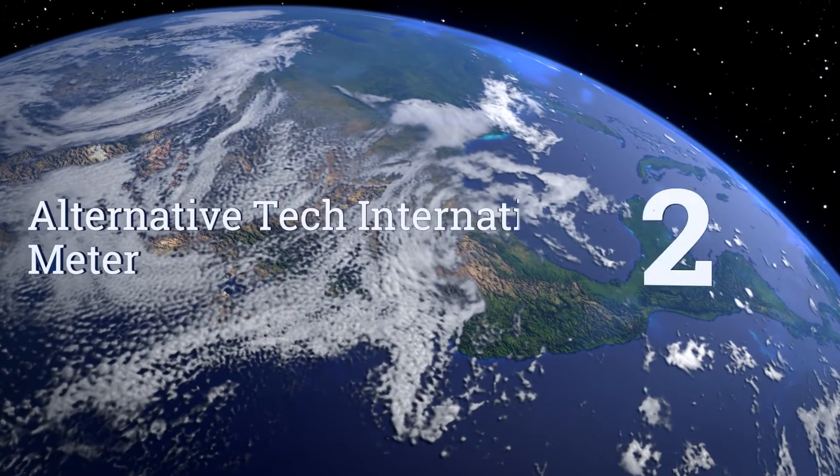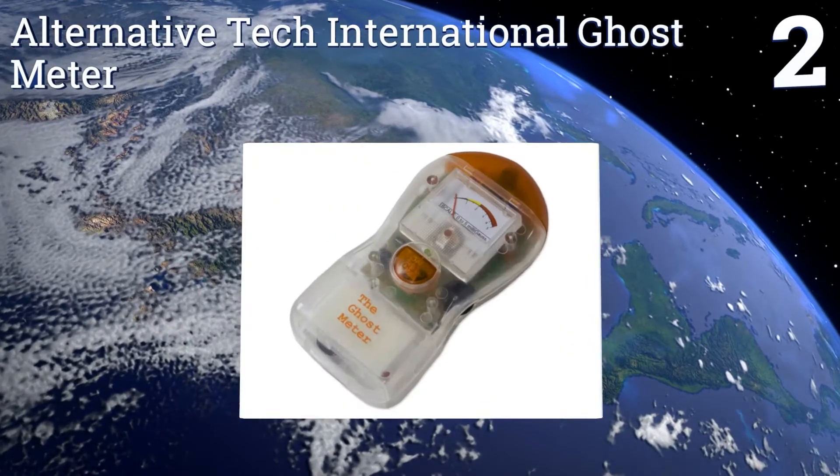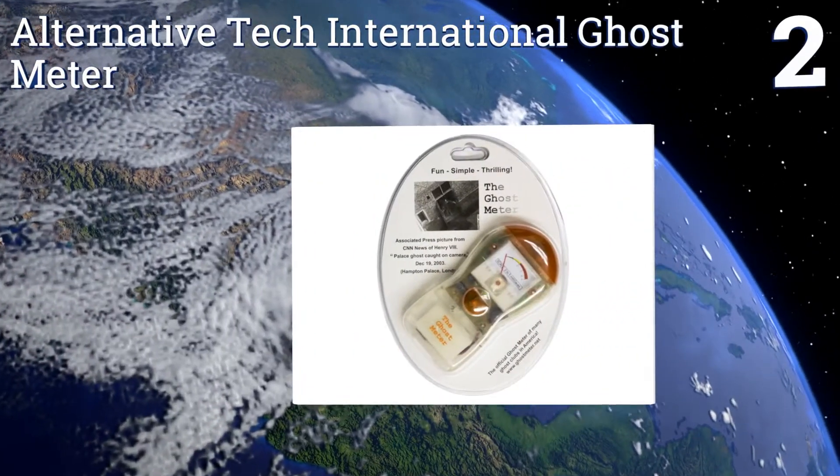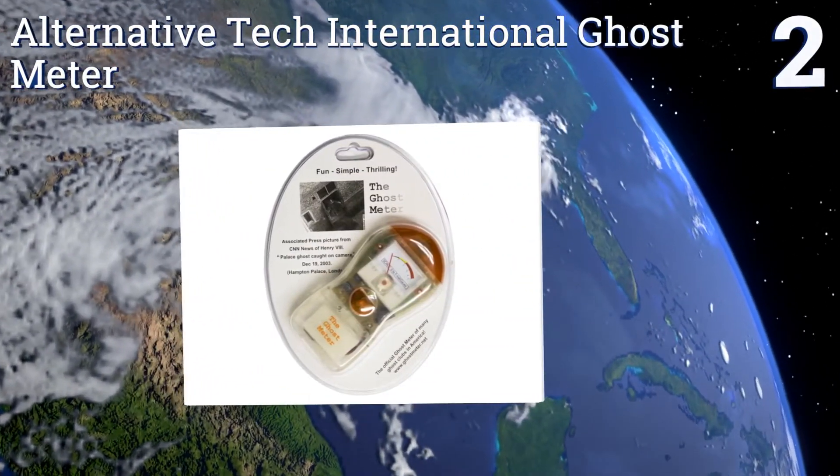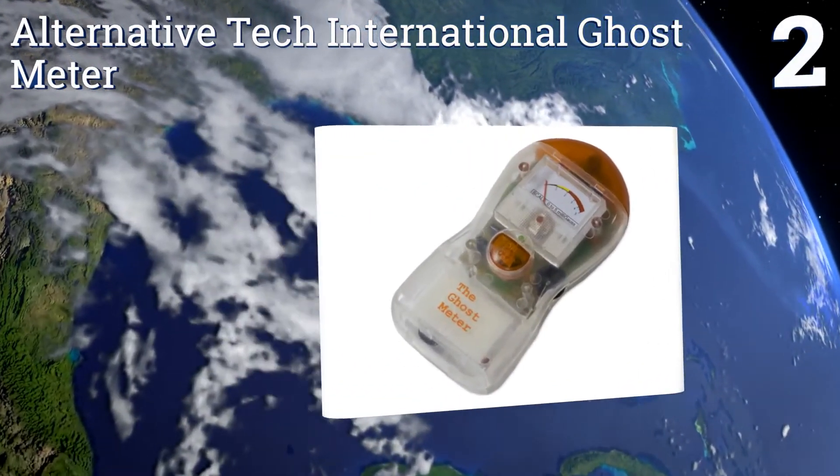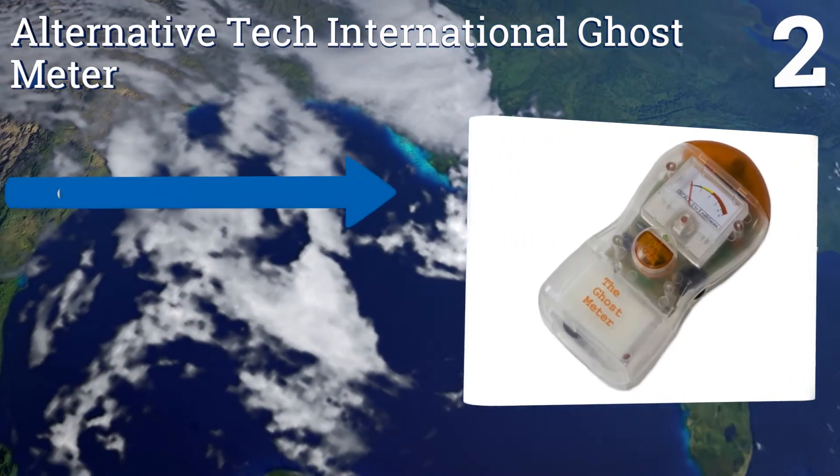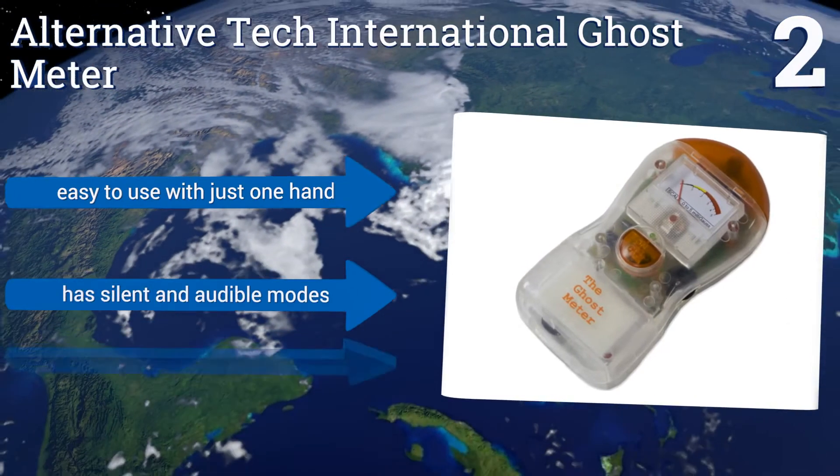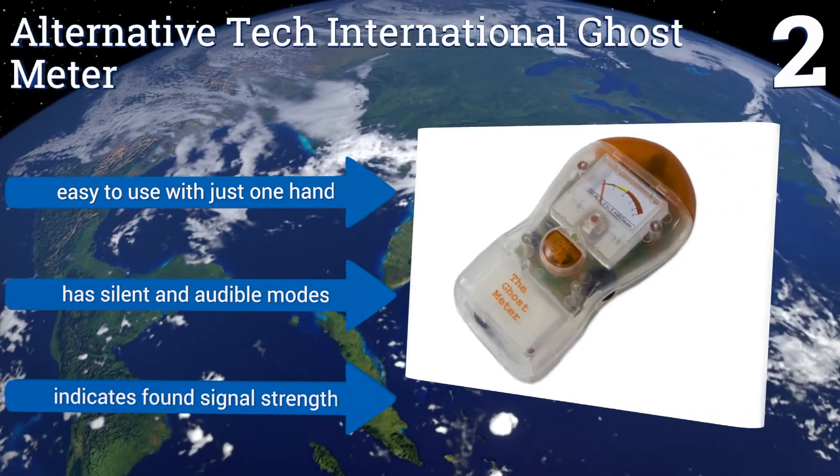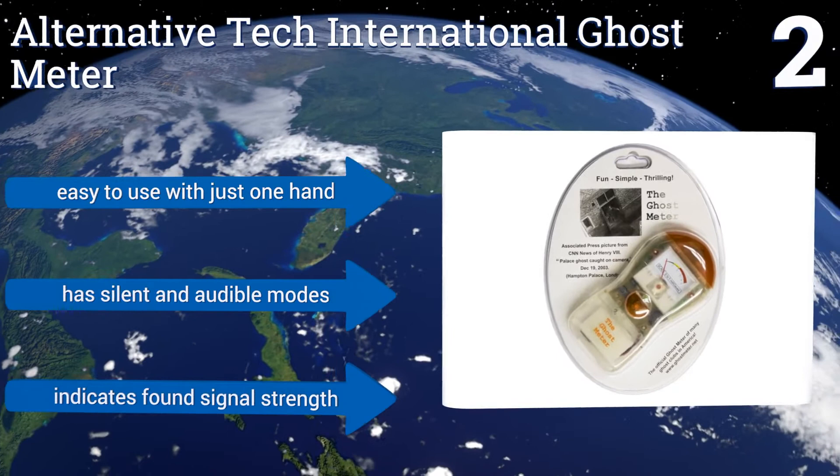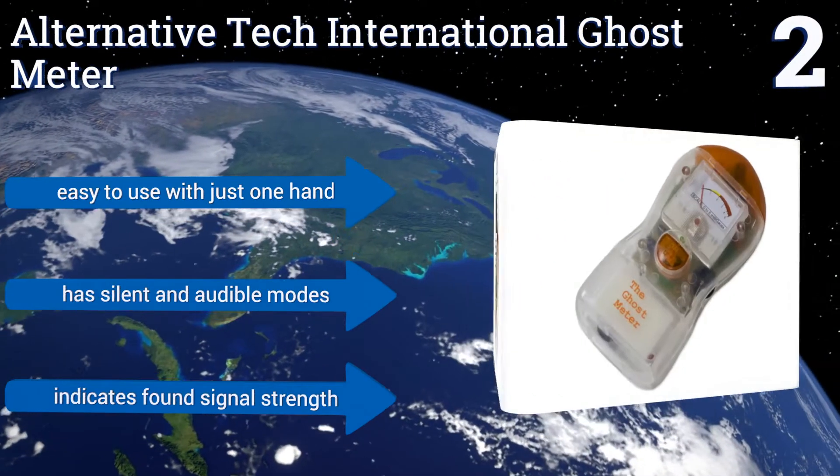At number 2, if you're looking for ghosts, perhaps you should try the aptly named Alternative Tech International Ghost Meter. It's a low-cost way to potentially detect the electromagnetic disturbances caused by dead people. Who needs Haley Joel Osment anyway? It's easy to use with just one hand, and has silent and audible modes. It indicates the found signal strength.